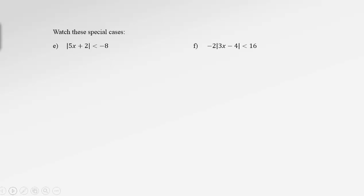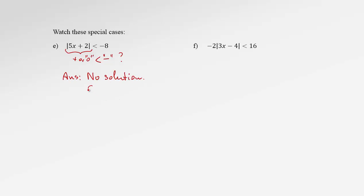Two more examples — these are very special cases. We have absolute value of something, which is always positive or zero, and the statement says this non-negative number is smaller than a negative number. No positive number will be smaller than a negative number, and zero will never be smaller than a negative number either. So in this case, we don't need to solve anything — the answer is no solution, or the solution set is an empty set.